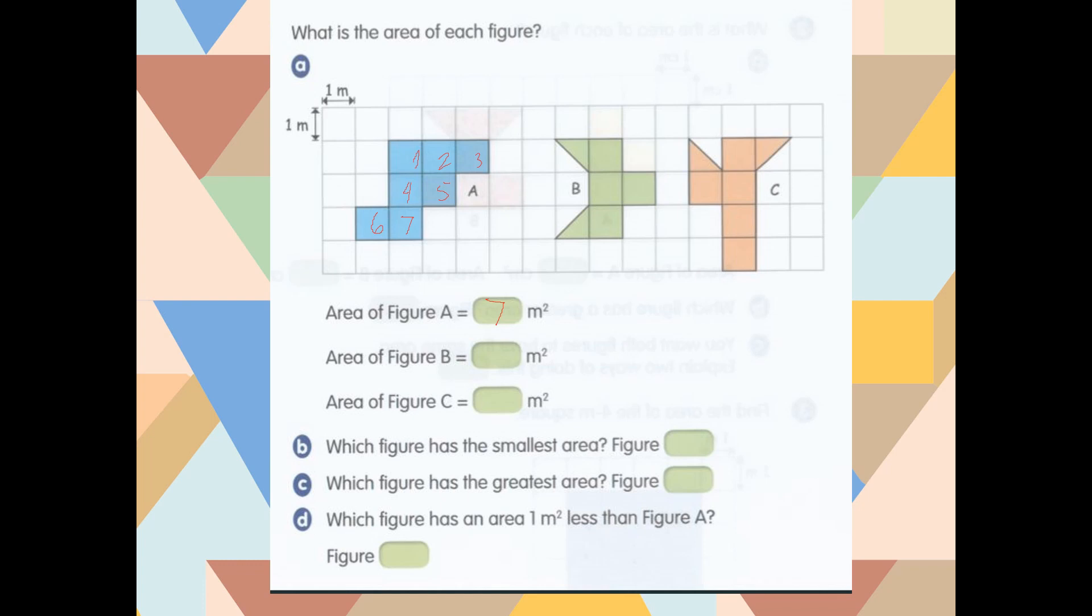For figure B, let's count the full squares first. 1, 2, 3, 4. And I have 2 halves, that equals 1. Our best estimate is 5. So the area of figure B is 5 square meters.